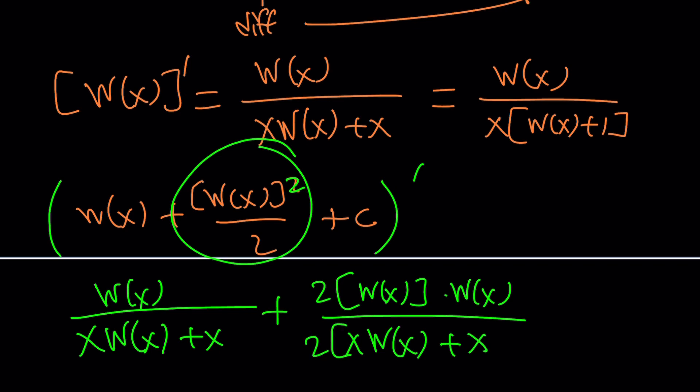And, of course, don't forget the two in the denominator. And then, the derivative of c is zero because it's a constant. The twos cancel out.